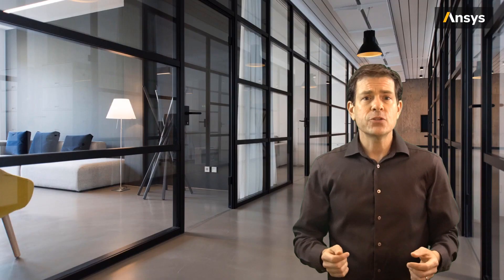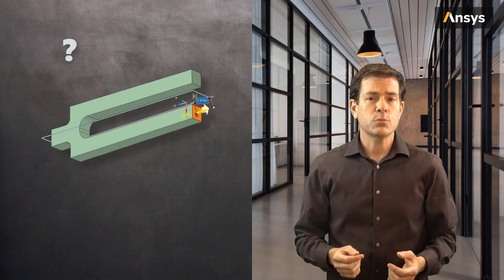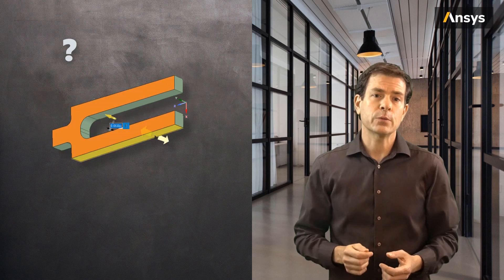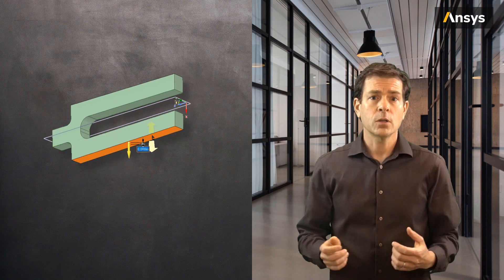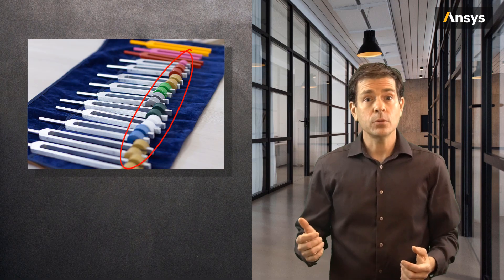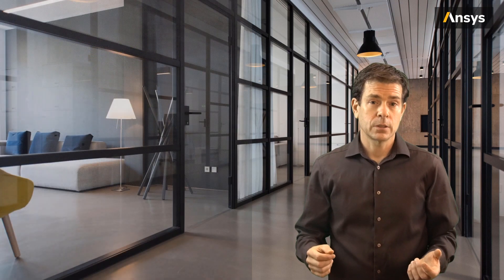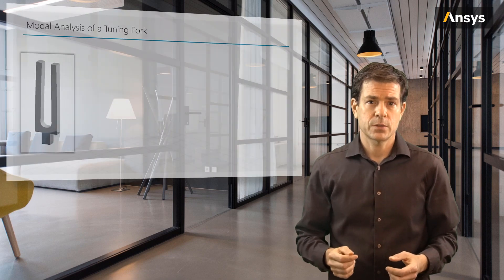Looking at the tuning fork, what would be the most important dimension of the fork that governs the natural frequency? Or, if we were to add weight to the tips of the forks, would the frequency go up or would it go down? Let's use a simulation model of a tuning fork to answer these questions.